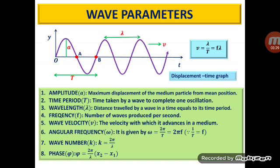If we consider two points on the wave which are separated by a distance x2 minus x1, then the phase difference between those two points is given by phi equals 2 pi by lambda into (x2 minus x1). By the definition of wavelength, wavelength of a wave represents the distance travelled by a wave in a time equal to its time period. Therefore, the wave velocity is given by v equals lambda by T. Since the reciprocal of the time period gives the frequency, velocity can also be expressed as f times lambda.